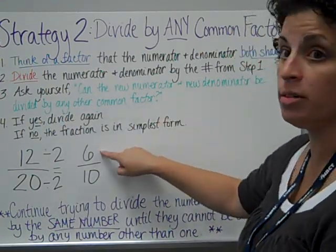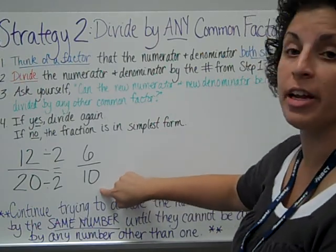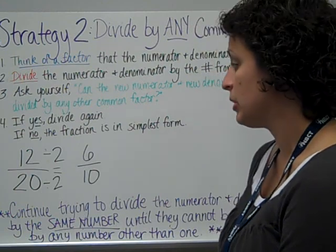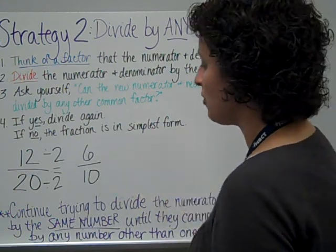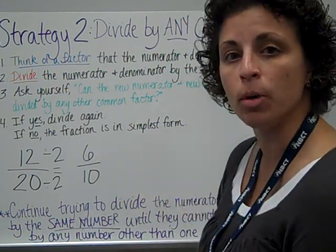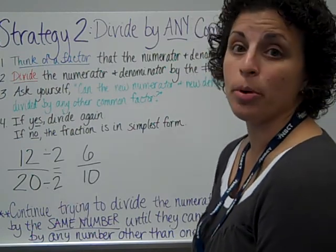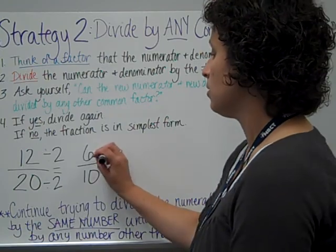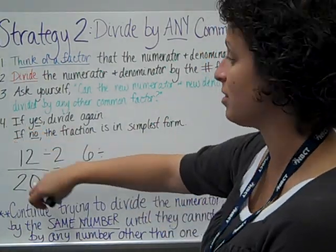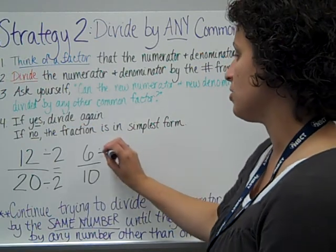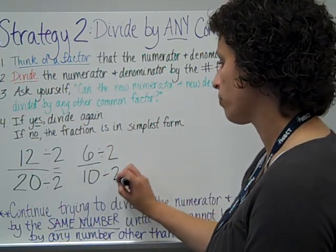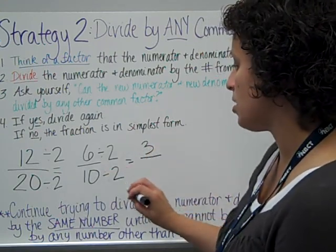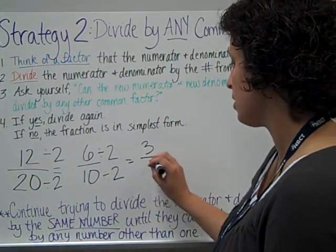But then I have to ask myself, can the new numerator, 6, and the new denominator, 10, be divided by any other common factors? And so I have to look at 6 and I have to look at 10 and think about how I would multiply to make those. And I know that they're both still even, so I could divide by 2 again. And if the answer was yes, yes, then I need to divide again. So I'm going to divide by 2. 6 divided by 2 is 3, and 10 divided by 2 is 5.